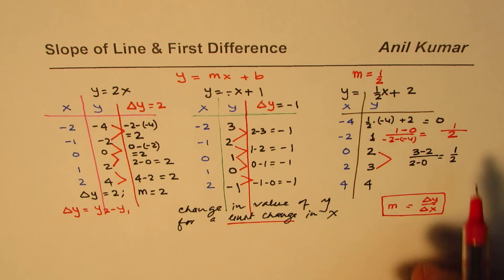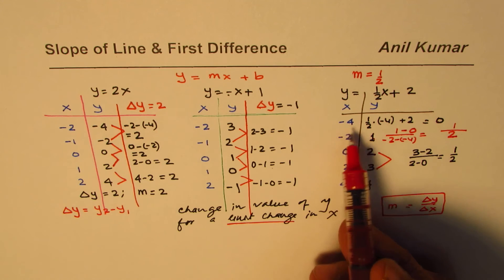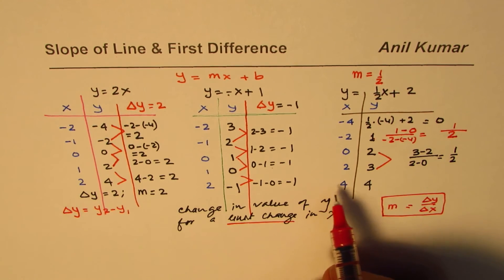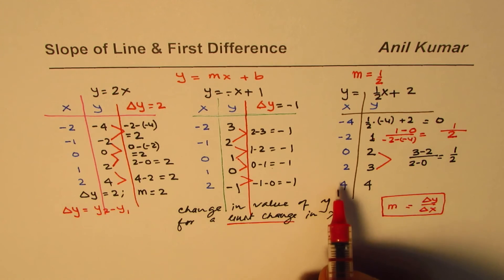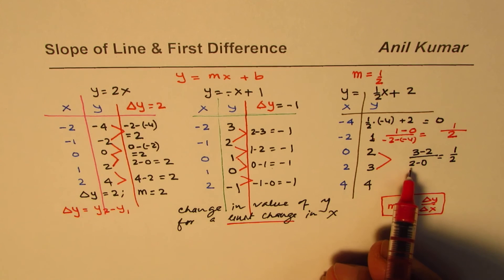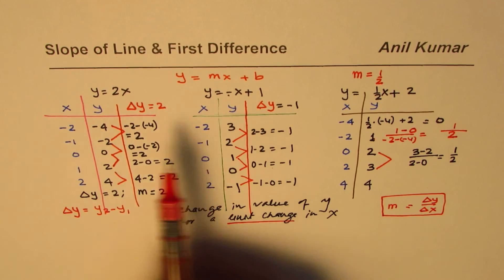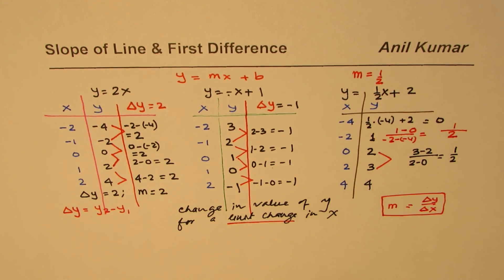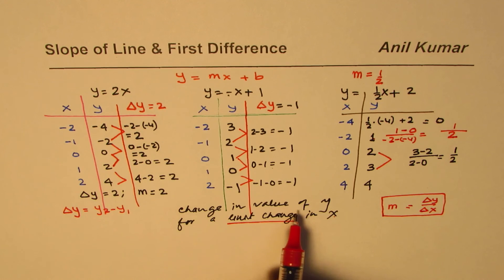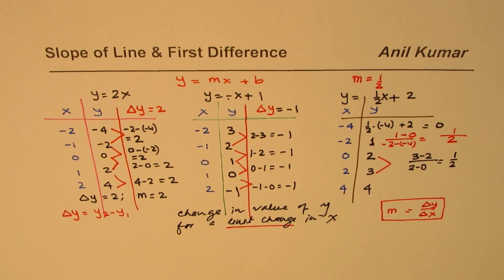We took x values with a difference of 2 for convenience, but normally when calculating first difference, x values differ by 1. In that case we don't need to divide by change in x since it is always 1. In general, the first difference is always equal to the slope when the change in x is a unit change. I hope this helps you understand the relation between the two. Thank you and all the best.